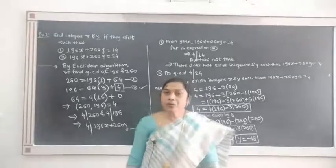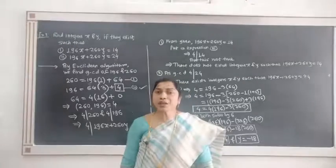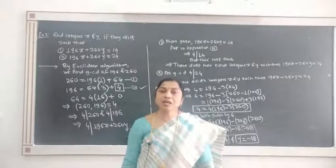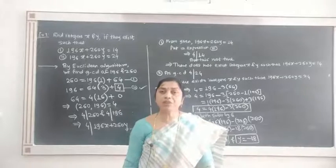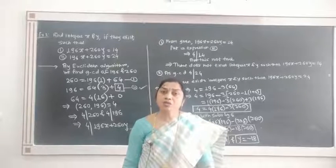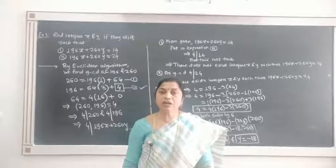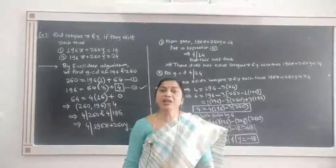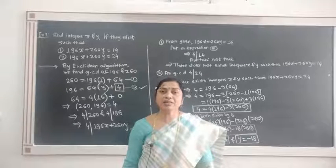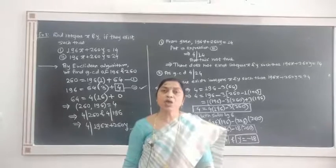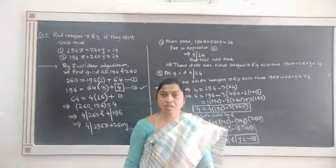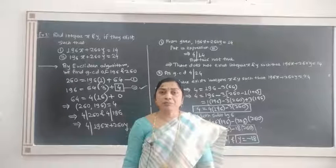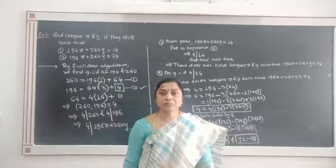Today we have seen the Euclidean algorithm to find the greatest common divisor of given integers. We showed that the GCD can be expressed as a linear combination of the given integers, and that the positive GCD is unique. Thank you.